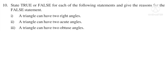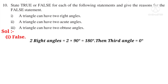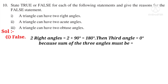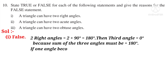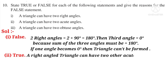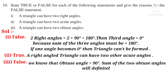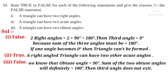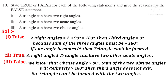Tenth problem: State true or false for each statement. (1) A triangle can have two right angles — False, because two right angles sum to 180°, making the third angle 0°, so a triangle cannot be formed. (2) A triangle can have two acute angles — True; a right-angle triangle can have two other acute angles. (3) A triangle can have two obtuse angles — False, because two obtuse angles already sum to more than 180°, so a third angle cannot exist and a triangle cannot be formed.